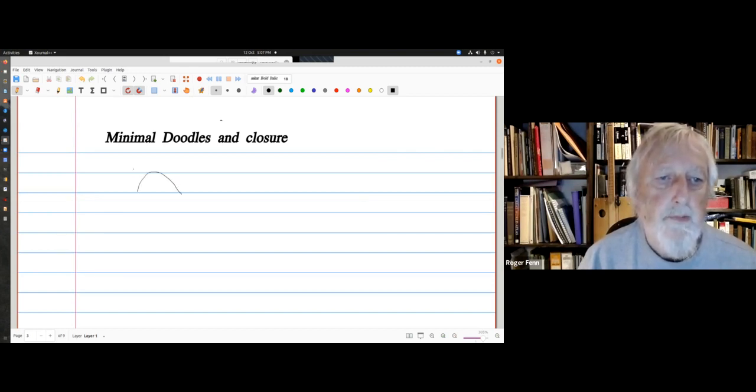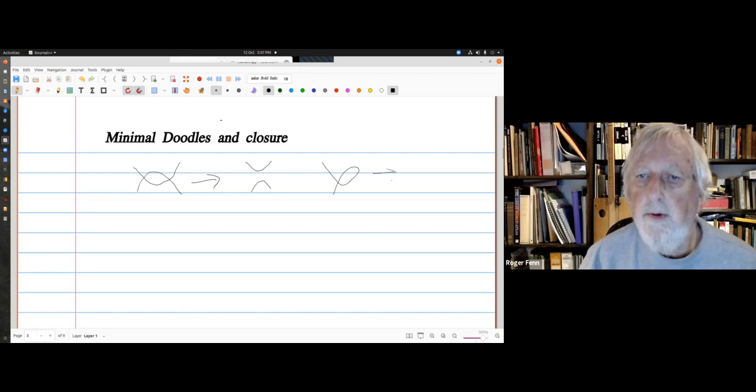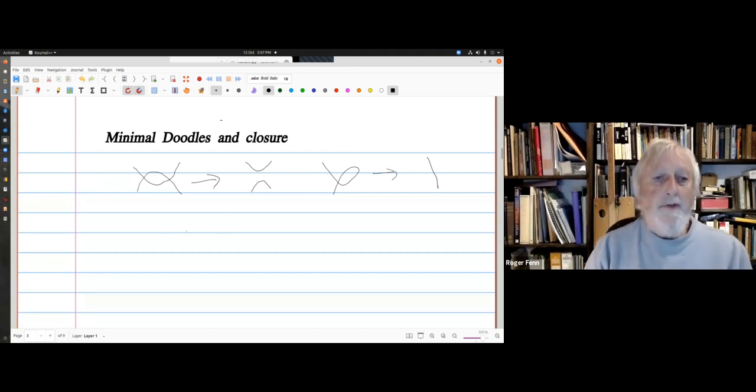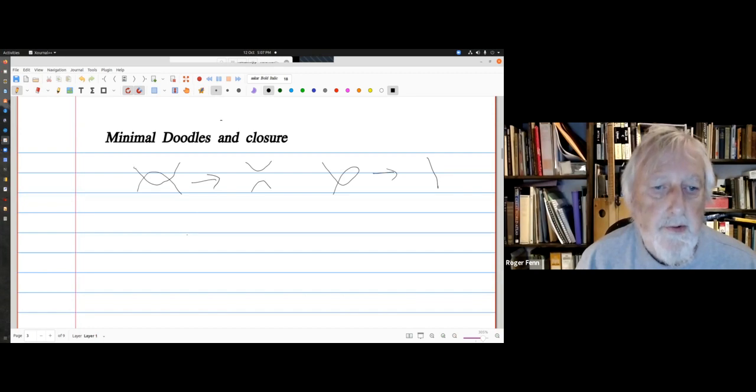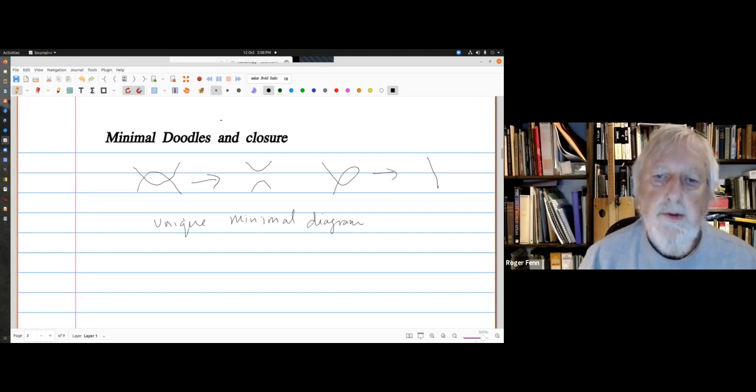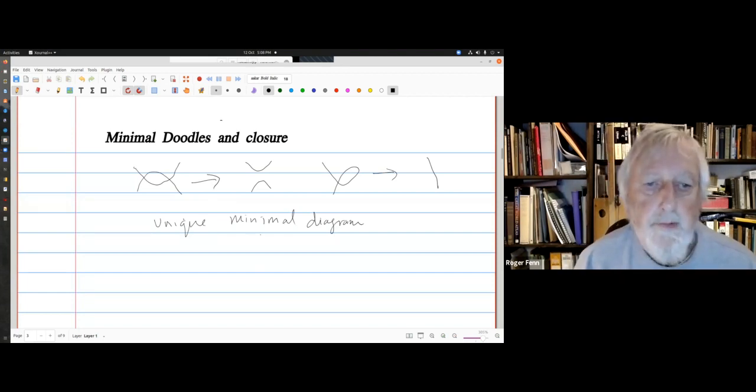What is true is that I can eliminate bigons and monogons. That's Reitermeister one and two. And it is a fact that every doodle collapses to a unique minimal diagram, which is quite a contrast with normal knots.